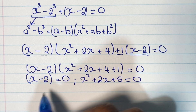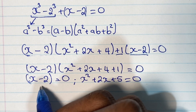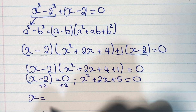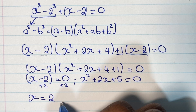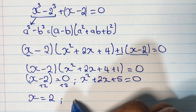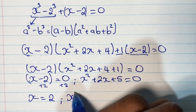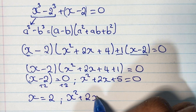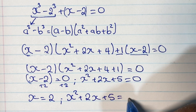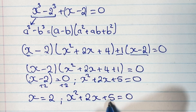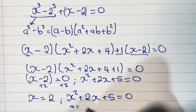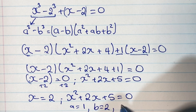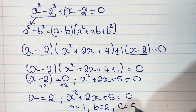Where we have x minus 2 equals 0, we add 2 to both sides: the 2 on the left cancels out and on the right we have 0 plus 2, so x equals 2. For the other factor, x squared plus 2x plus 5 equals 0, we solve using the quadratic formula. Here a equals 1, b equals 2, and c equals 5.